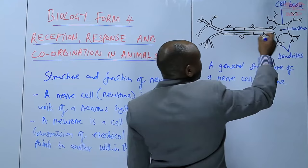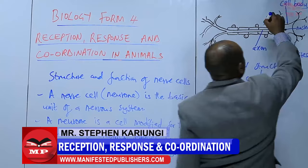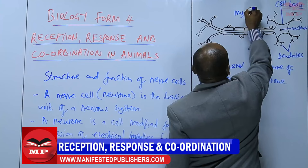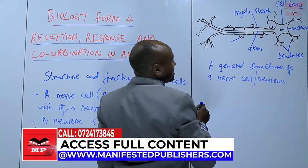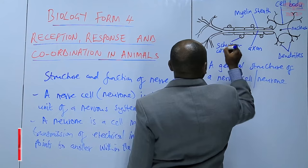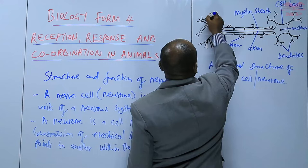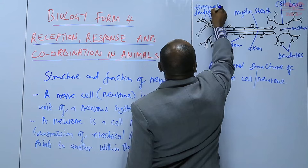Then there is the main filament that projects from the cell body — we refer to that as the axon. From the axon, we have a part that surrounds the axon, which we refer to as the myelin sheath. We shall look at it in more detail. Then we have a cell next to the myelin sheath — we refer to it as the Schwann cell. And at the end we have what we call the terminal dendrites.